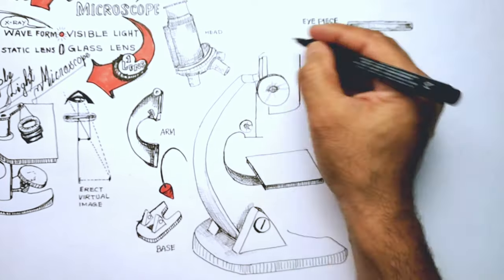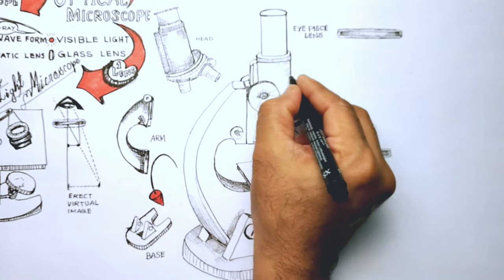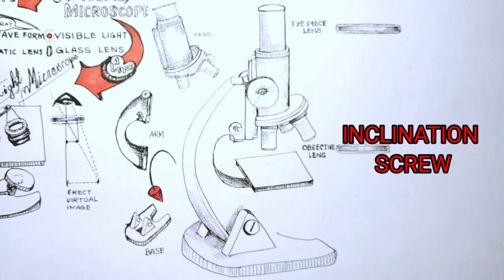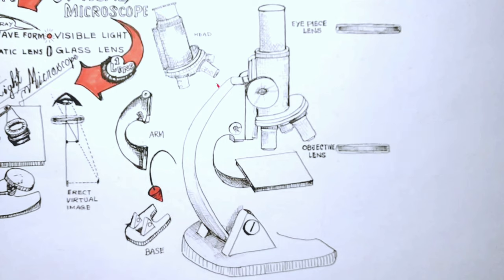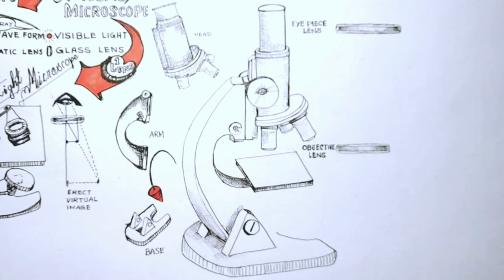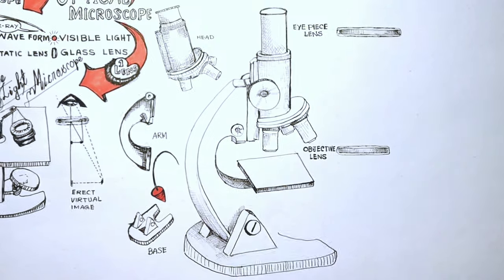The body tube with all these lenses is arranged on the arm which is connected to a strong base at the lower end with an inclination screw. The screw allows the arm of the microscope to tilt a little. The arm is used to carry the microscope. A microscope is a heavy instrument. So when carrying a compound microscope always take care to lift it by both the arm and the base simultaneously.